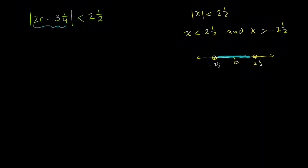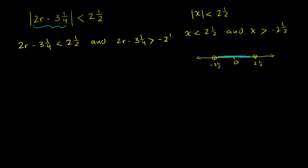The distance from this expression to 0 has to be less than 2½. So we can write that 2r minus 3¼ has to be less than 2½, and 2r minus 3¼ has to be greater than negative 2½. This quantity has to be between negative 2½ and 2½.